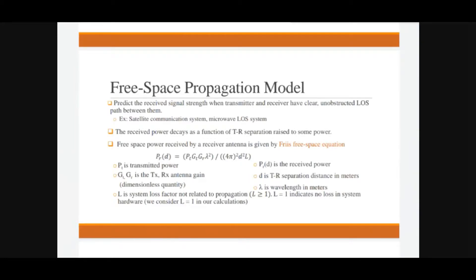Having a line of sight between transmitter and receiving base stations means there is no obstacle between them. We will measure the signal strength for these unobstructed line-of-sight paths between transmitter and receiver sites. This is the free space propagation model, used in microwave and satellite communication systems.